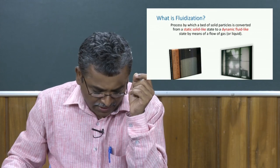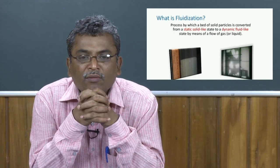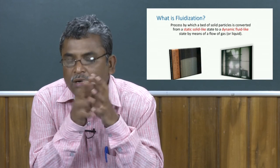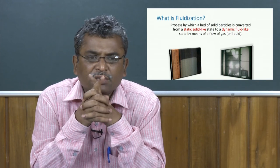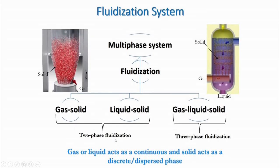The different phases are gas, liquid, and solids. Combinations of these phases form multi-phase systems. For example, gas and liquid, gas and solid, liquid and solid, liquid-liquid, and gas-liquid-solid — there are different combinations. These different combinations are called multi-phase combination systems. Fluidization is one of the multi-phase systems.